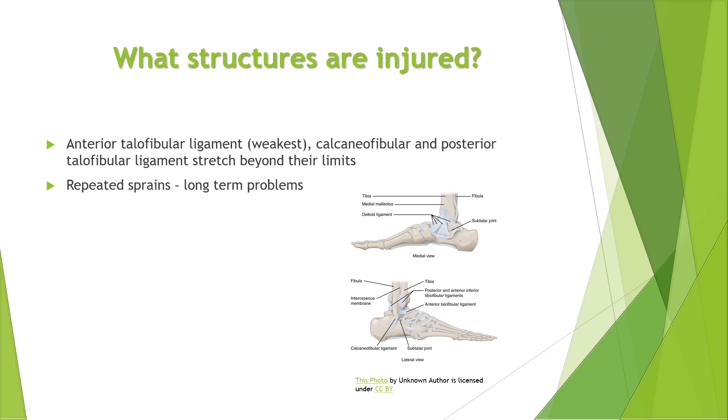If a person has repeated ankle sprains, it can lead to long-term problems, including ankle pain, arthritis, and ongoing instability. The ligaments in the ankle help to keep the ankle in position and stabilize the joint.